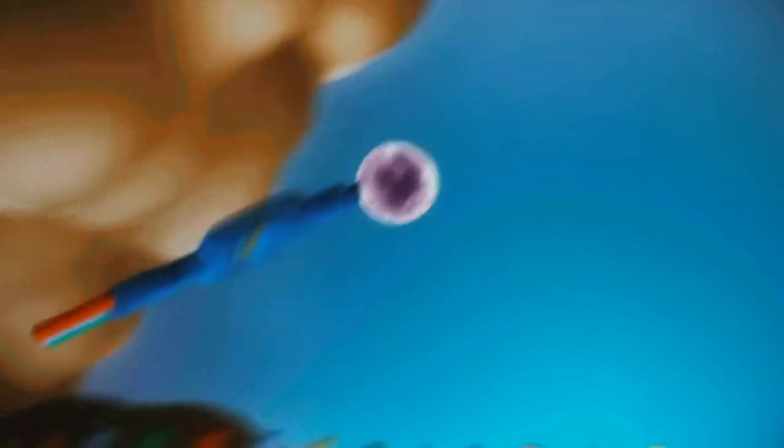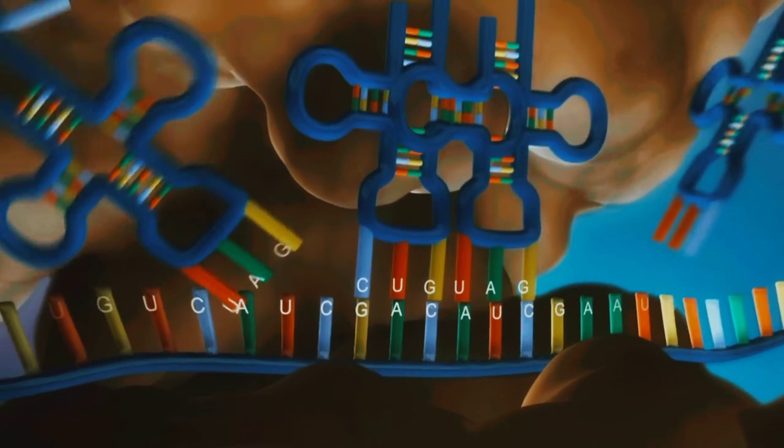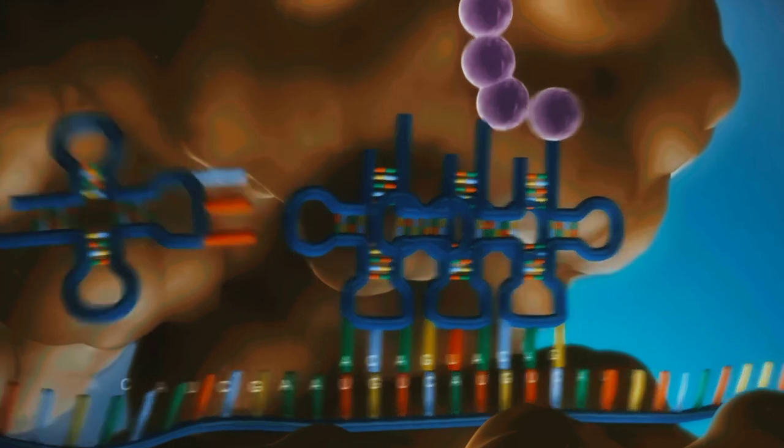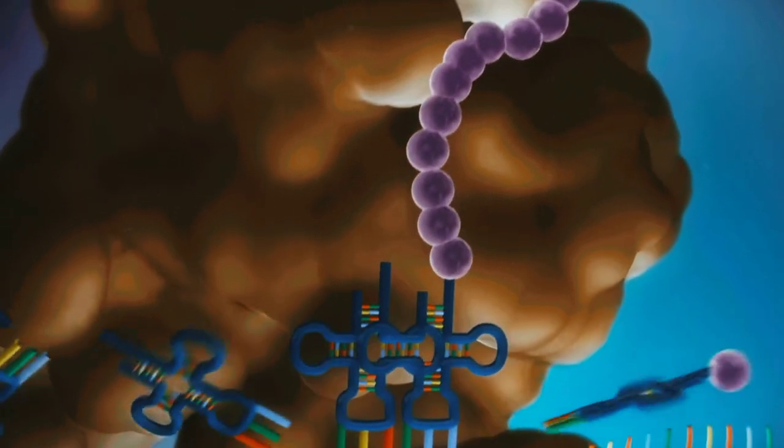The messenger RNA is read three bases at a time. As each triplet is read, a transfer RNA delivers the corresponding amino acid. This is added to a growing chain of amino acids.